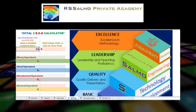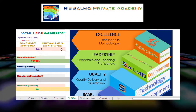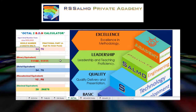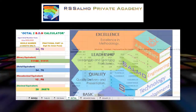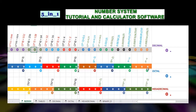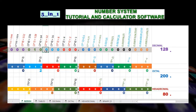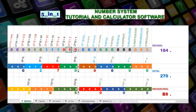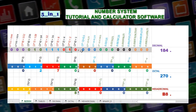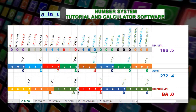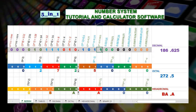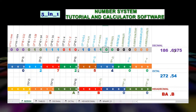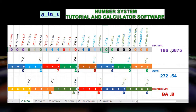If you enroll now in this course, you will receive from me and my daughter our copyrighted software — the 5-in-1 number system tutorial and calculator — free of charge. This software can convert from any of the 4 number systems like decimal, binary, octal, or hexadecimal to the other number system automatically.